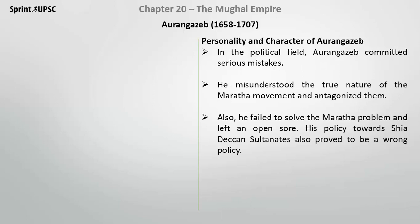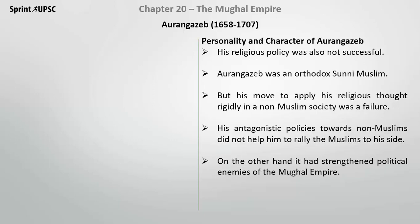In the political field, Aurangzeb committed serious mistakes. He had misunderstood the true nature of the Maratha movement and in fact antagonized them. He failed to solve the Maratha problem and left an open sore. His Deccan policy against the Shia-ruled Deccan Sultanates was also driven by religious orthodoxy.